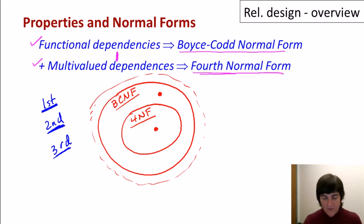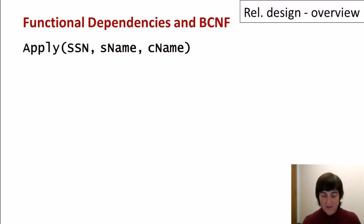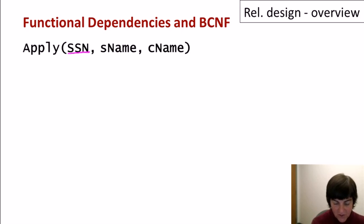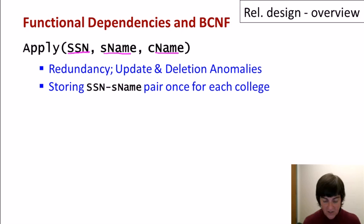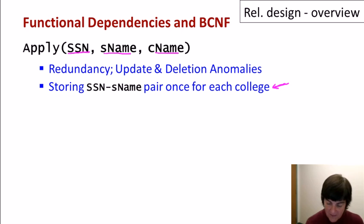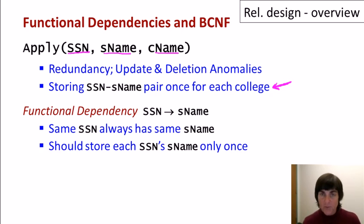Next, I'll give examples to motivate four concepts: functional dependencies, Boyce-Codd normal form, multi-valued dependencies, and fourth normal form. Let's use a simple abbreviated version of our apply relation with student social security numbers, student names, and colleges applied to. Even this small relation has redundancy and update and deletion anomalies. If student 123 Ann applies to seven colleges, there will be seven tuples and seven instances storing the fact that SSN 123 belongs to Ann — storing each name/SSN pair once per college applied to.